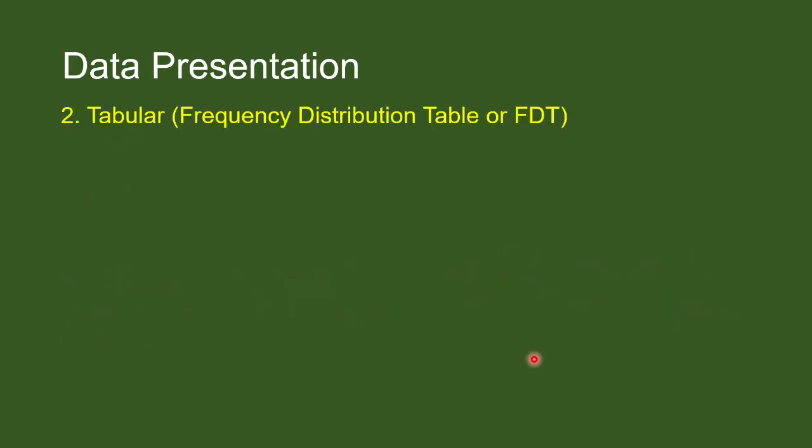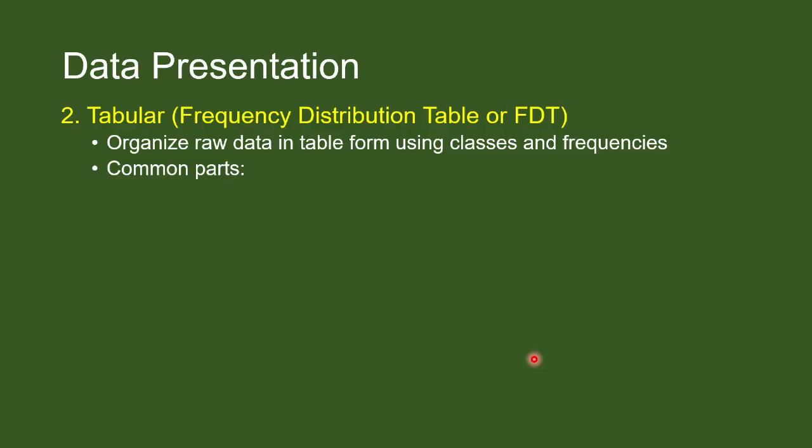There are also other ways, like tabular form, from the word itself, table, or frequency distribution table, FDT. When we talk about FDT, this is organizing raw data in table using different classes and frequencies. When we say classes, it can be qualitative or categorical, like city or country where a person lives. And when we say frequency, it is the number of data that is corresponding to a certain class. The count of the data corresponding to the certain class. So, the following are the common parts of statistical tables.